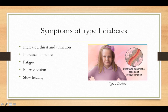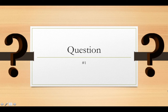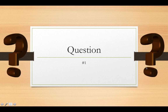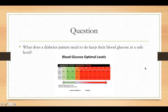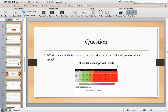Symptoms of type 1 include fatigue, blurred vision, slow healing, increased appetite, and increased thirst and urination. Here's a question to consider: what does a diabetes patient need to do to keep their blood glucose at a safe level? Go back in your notes and answer this question — this is question number one.